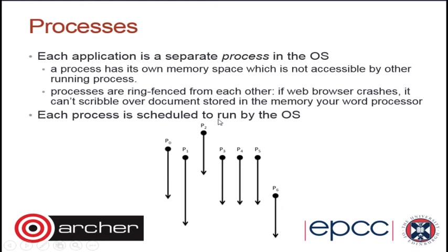Each application is a separate process to the operating system, meaning each application has its own memory space which should not be accessible to any other application. This is how the OS controls security. A lot of computer hacking involves breaking this memory space boundary — using a bug to get outside one application's memory space into another's. Keeping applications isolated in their own memory spaces is the primary security control.